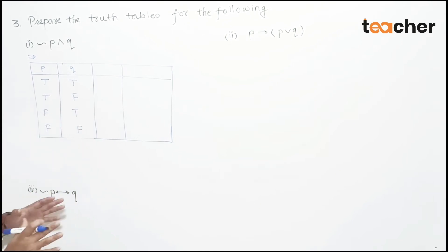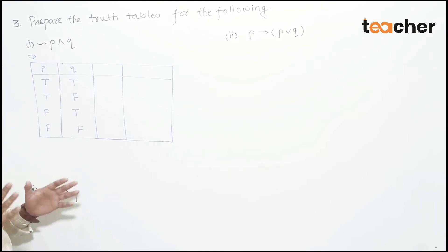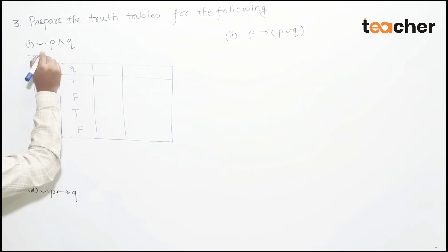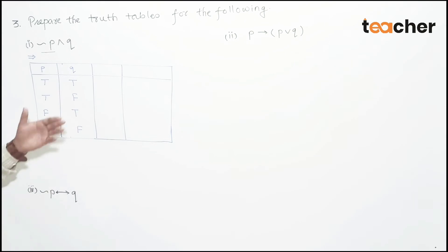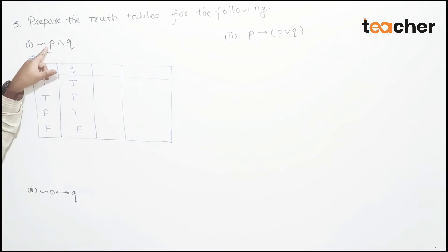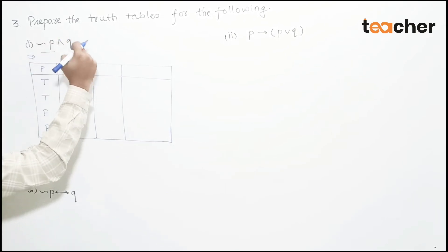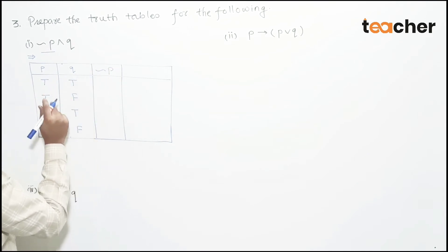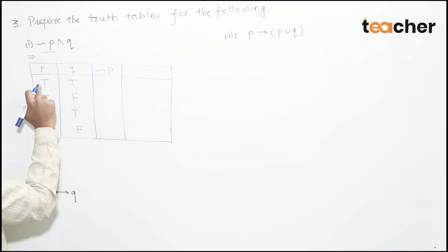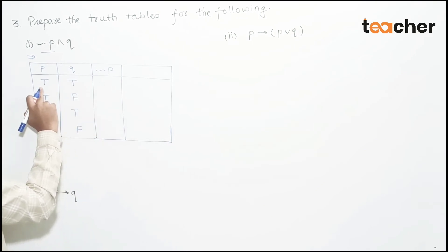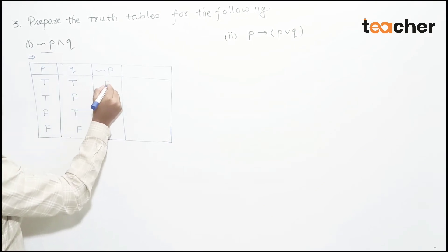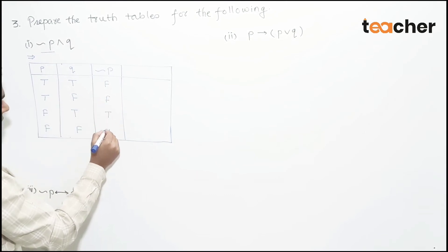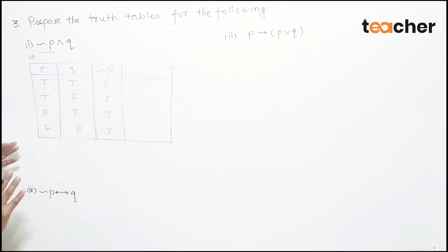We add a new column for negation of P. If P is true, negation of P is false; if P is false, negation of P is true. We fill in the negation of P column accordingly for all four rows.